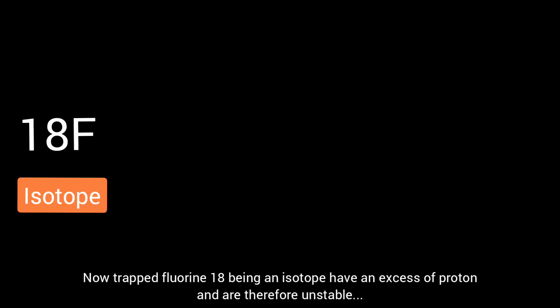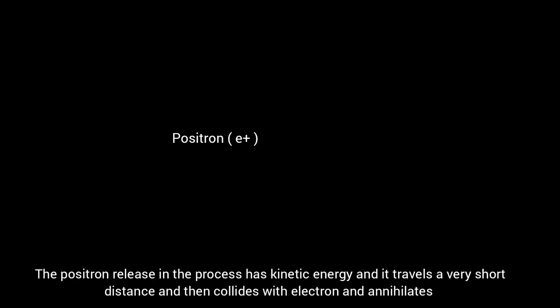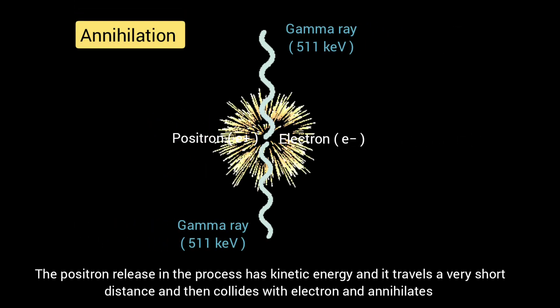The trapped fluorine-18, being an isotope, has an excess of protons and is therefore unstable. It decays by emission of a positron, which is a subatomic positively charged antiparticle of the electron. The positron released has kinetic energy, travels a very short distance, then collides with an electron and annihilates.